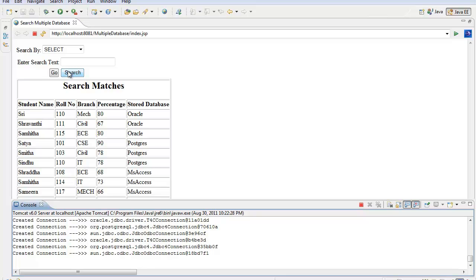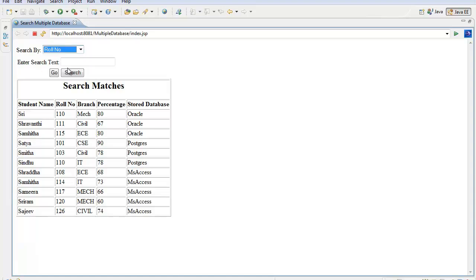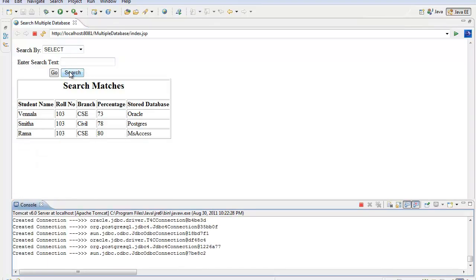We can also retrieve the records by using their role number. The search text being now entered is 103. The output is as shown.